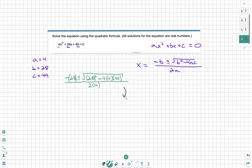And now we clean it up. Negative 28 plus minus the square root. We'll type in 28 squared in our calculator. We get 784 minus 4 times 4 times 49, which is also going to be 784.